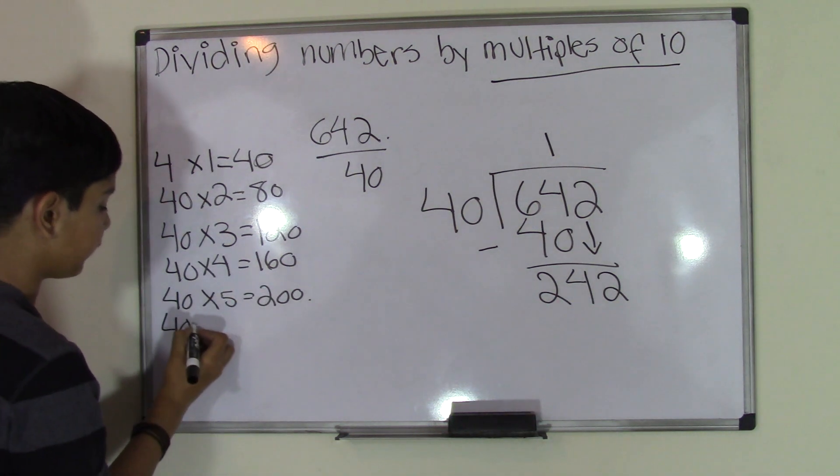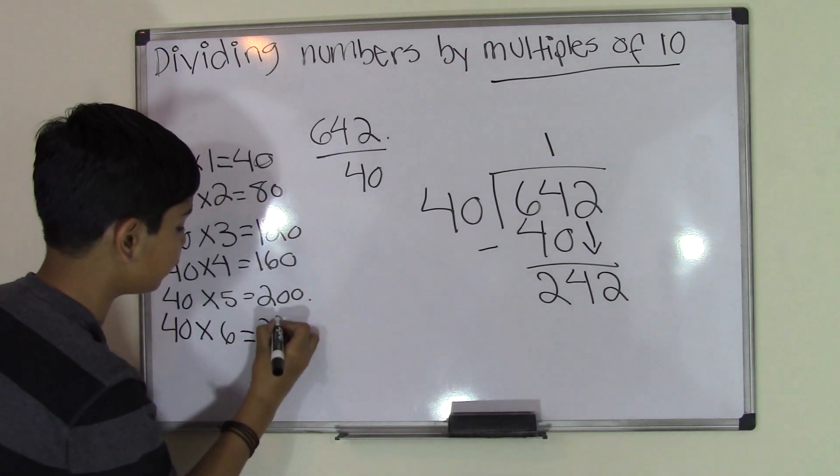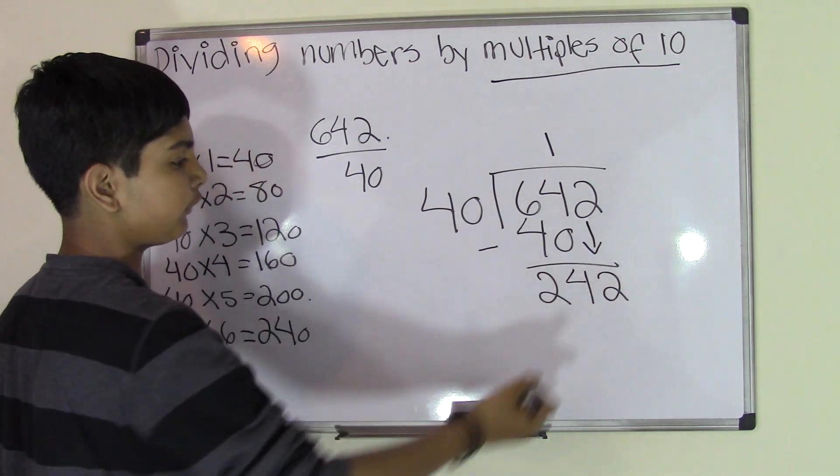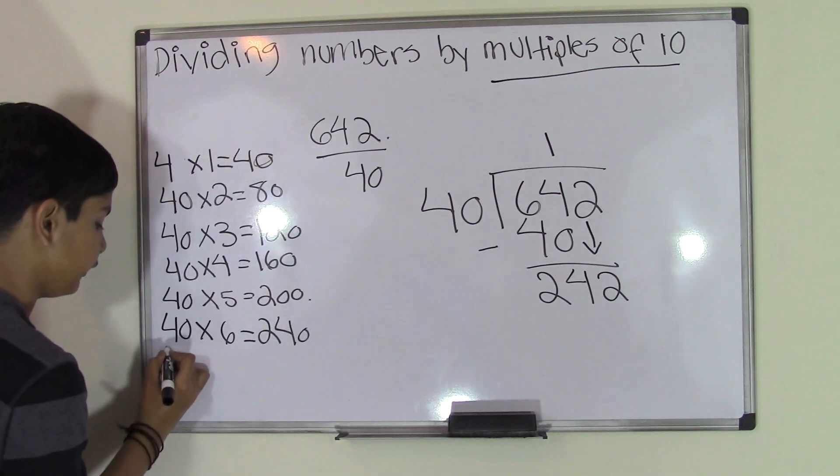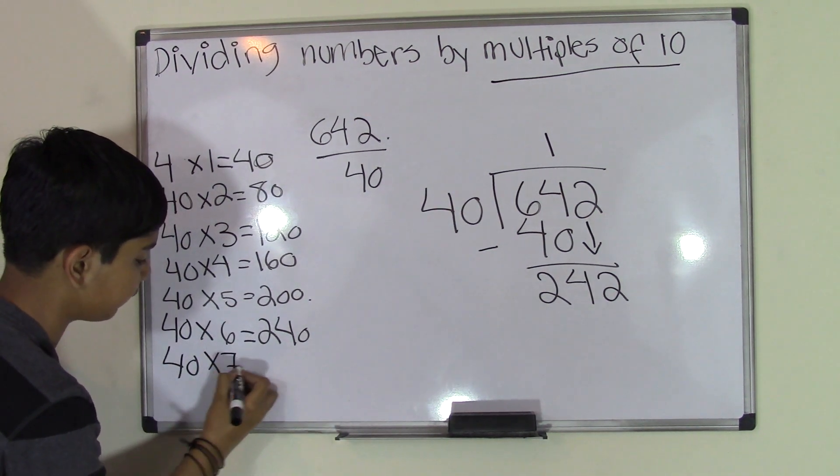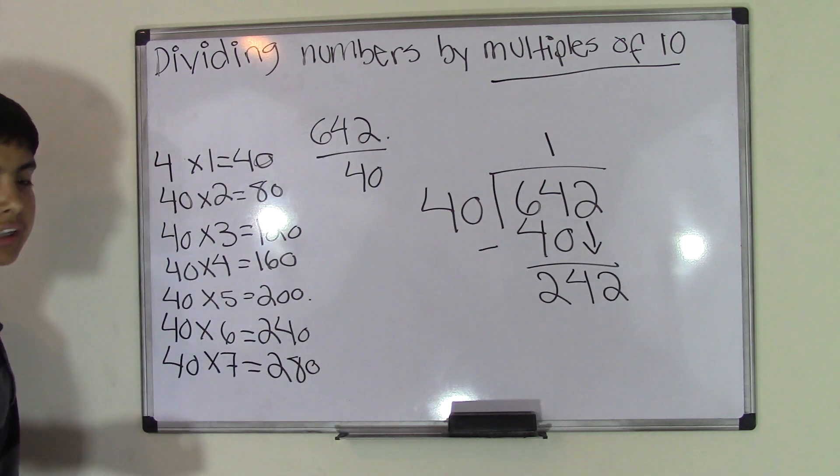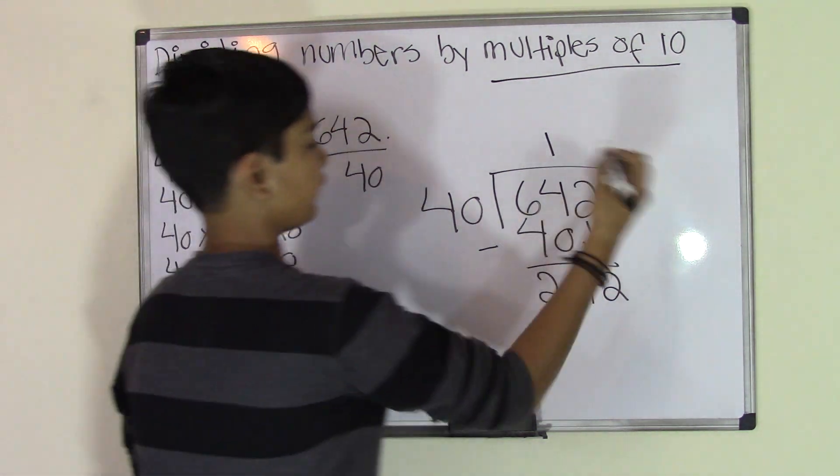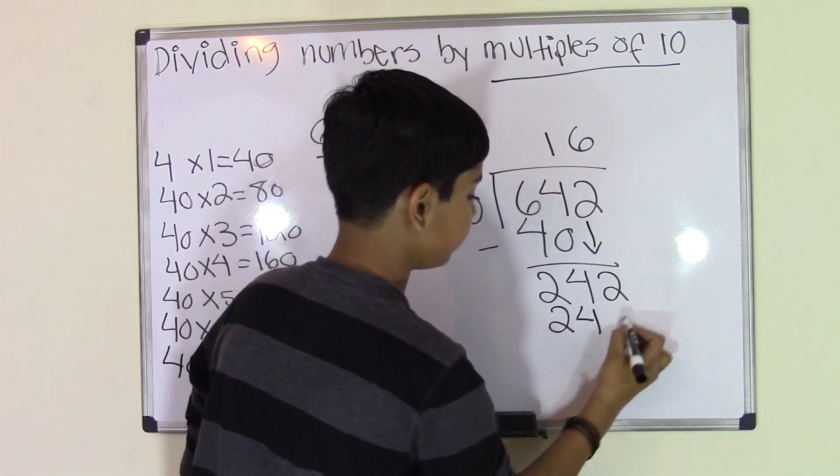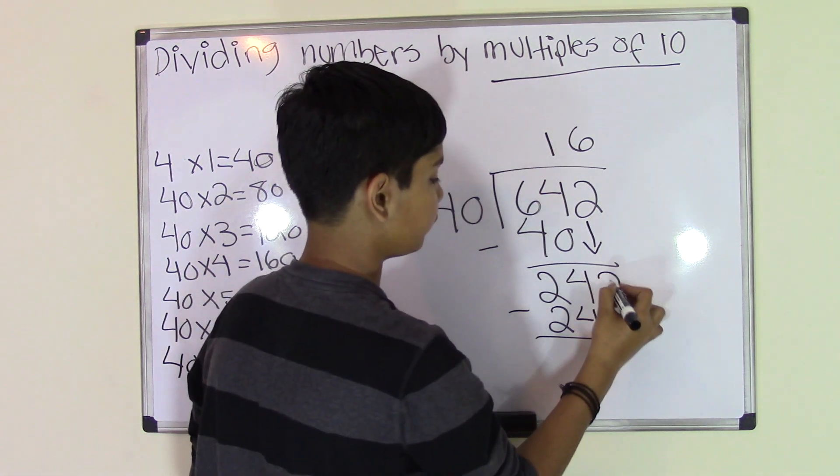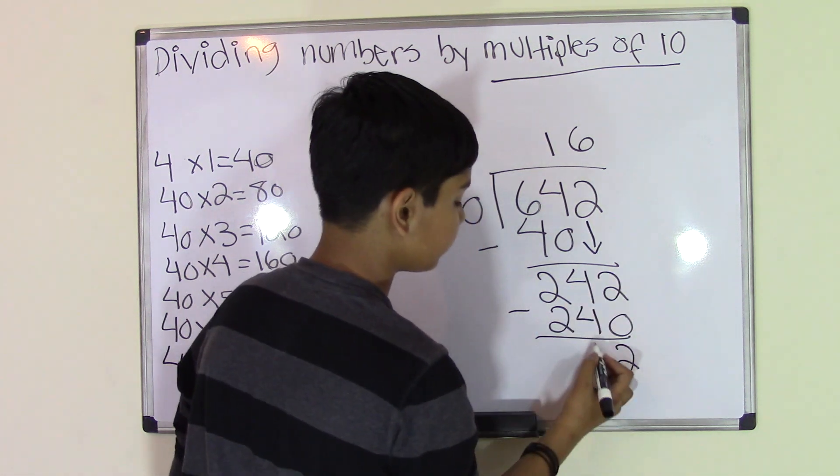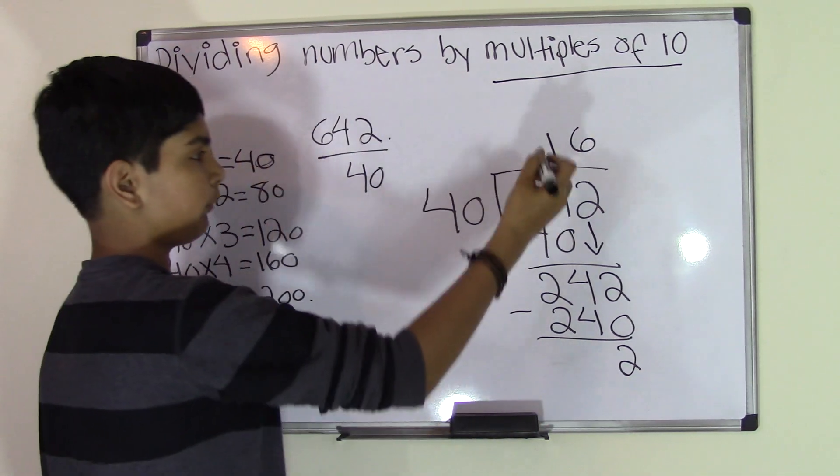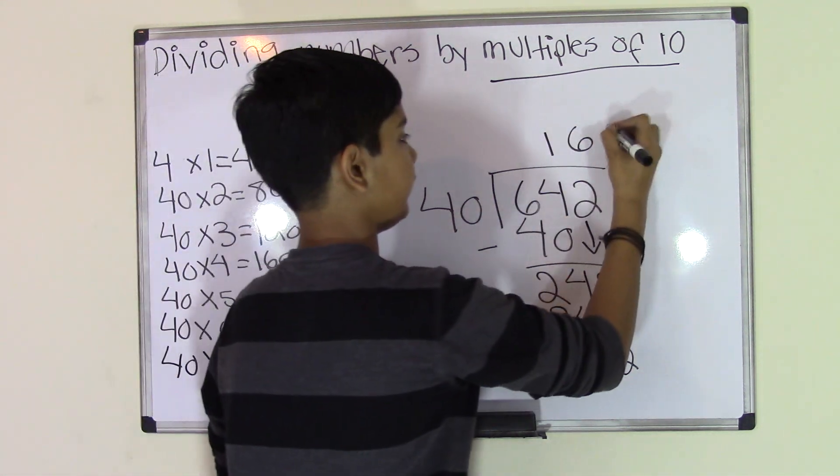If you keep on going, we know that 40 times 6 is 240. 240 is the closest we can get to 242. 40 times 7 is 280. No, we can't because 280 is greater than 242. So we'll go with 40 times 6 is 240. Now we subtract. 2 minus 0 is 2, 4 minus 4 is 0, 2 minus 2 is 0. Now we get an answer of 2. Our product will be 16 remainder 2.